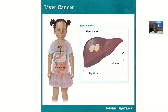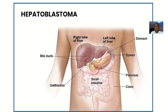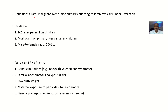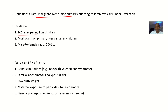It's a type of liver cancer. For the definition, it's actually a rare but malignant liver tumor affecting children — typically children under three years. The incidence is about one to two cases per one million children. It is the most common primary liver cancer in children.